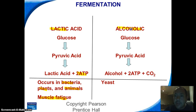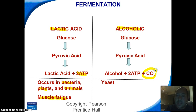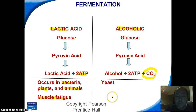Alcoholic fermentation, on the other hand: we start with glucose, go to pyruvic acid, then develop ethanol, two ATP, and carbon dioxide. It's important to understand that we yield carbon dioxide from alcoholic fermentation. The organisms we study that use alcoholic fermentation are yeast.